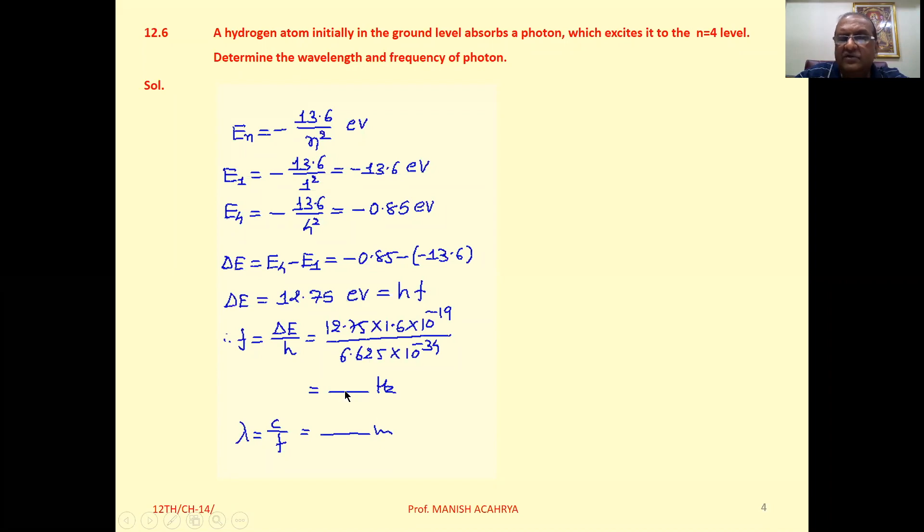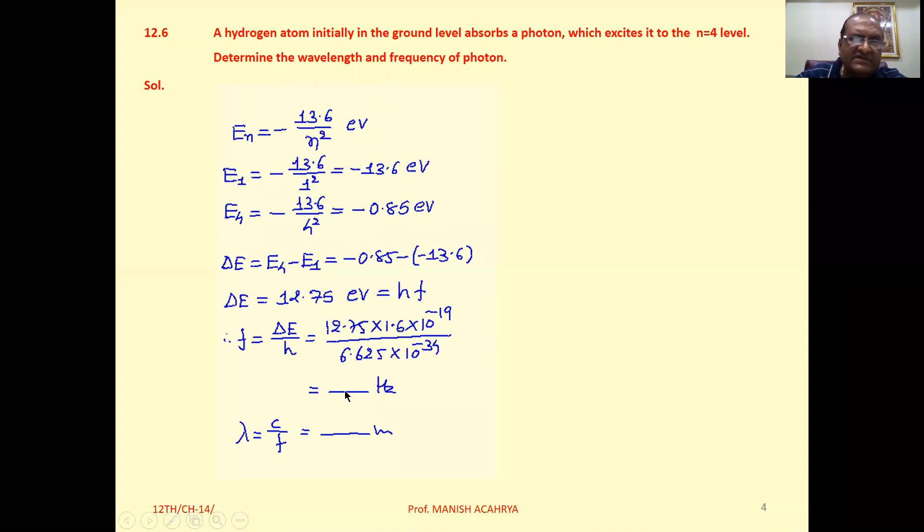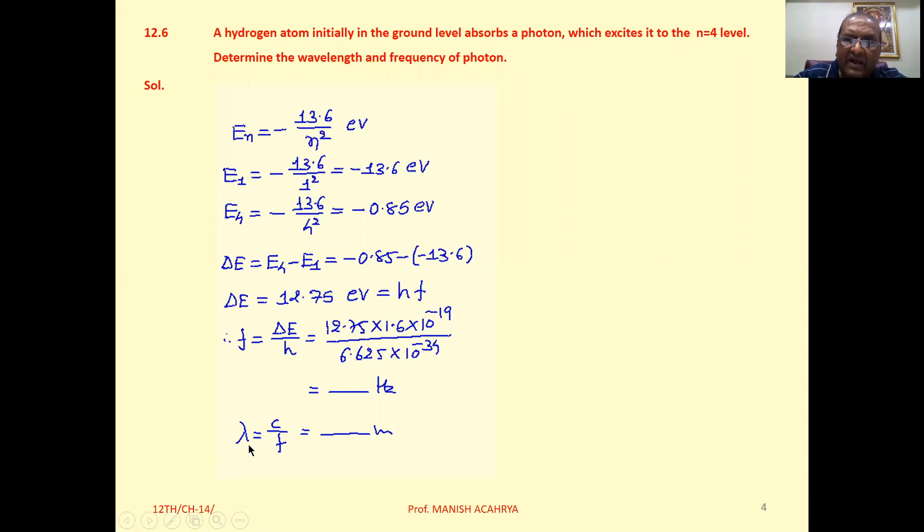The wavelength lambda equals c by f. Substitute the value of c, 3 into 10 raised to 8, and f which we calculated. Solve and you will get the wavelength of the photon.